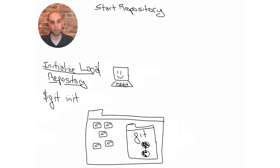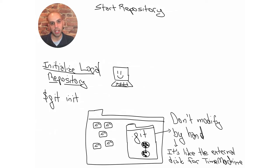Now that we understand what a repository is, let's see how Alice can create one. She runs the git init command or uses the graphical user interface. What happens is that there is the working directory with all the recipes in files, but then there is also this directory called .git. This directory is going to contain the repository — it's like a database that Alice will not touch by hand. She will always use the command line interface or a GUI to change the contents of the database.